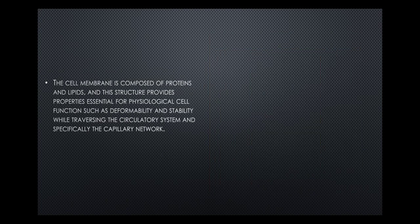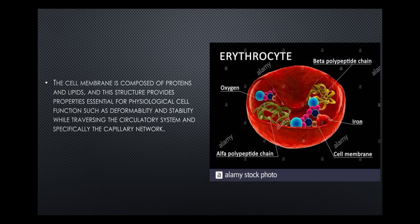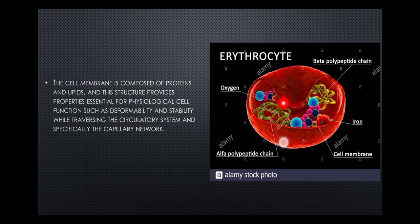The cell membrane is composed of proteins and lipids, and it is this structure that provides properties essential for physiological cell function, such as deformability and stability, while traversing the circulatory system and specifically the capillary network.